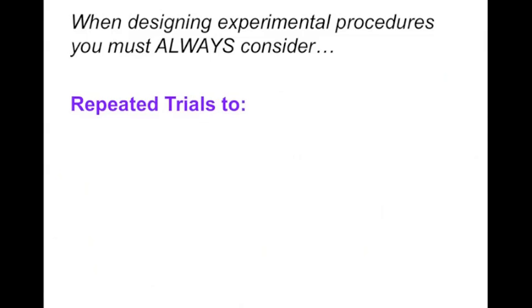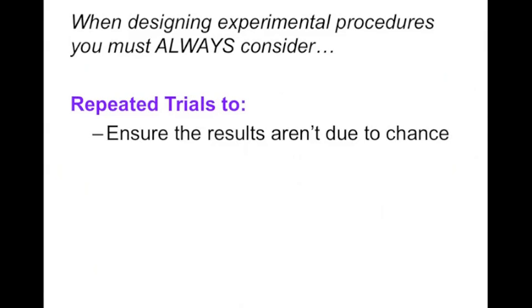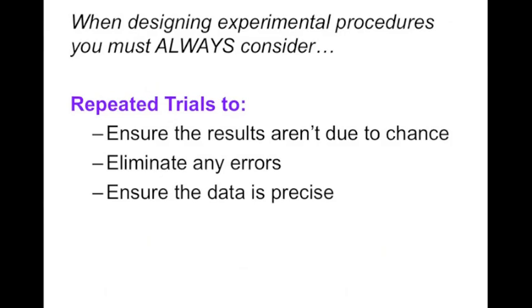Finally, you should always consider having repeated trials. It's really important to repeat the trials because we want to make sure that the results we end up with aren't just due to chance, they weren't just random, we didn't just get lucky. We want to have as many repeated trials as possible to eliminate any errors, any places where there weren't consistencies or constants, and just ensure that our data is as precise as possible. You're not a robot so you won't be able to be perfect, but we want to have the most accurate and precise data as possible.